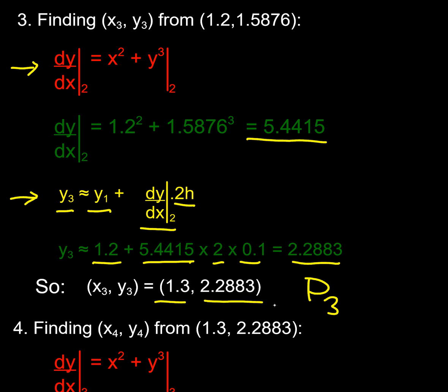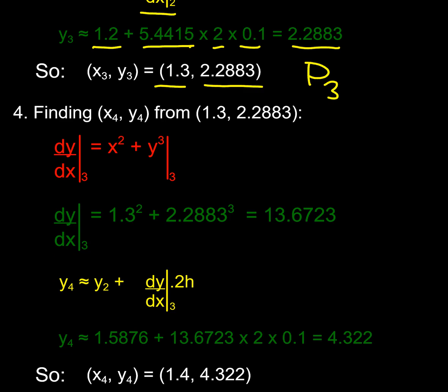Then I'm going to find my fourth point. I stick my p3 into there, I'm going to find my gradient at 1.3—that's 13.67—and then I'm going to use my midpoint equation. So I start at y2, that's my first point, 1.5876, and then I'm using my gradient from the midpoint and I'm going twice as far, and I get y4 is 4.3221. So that's my p4, and again my y-value is higher.